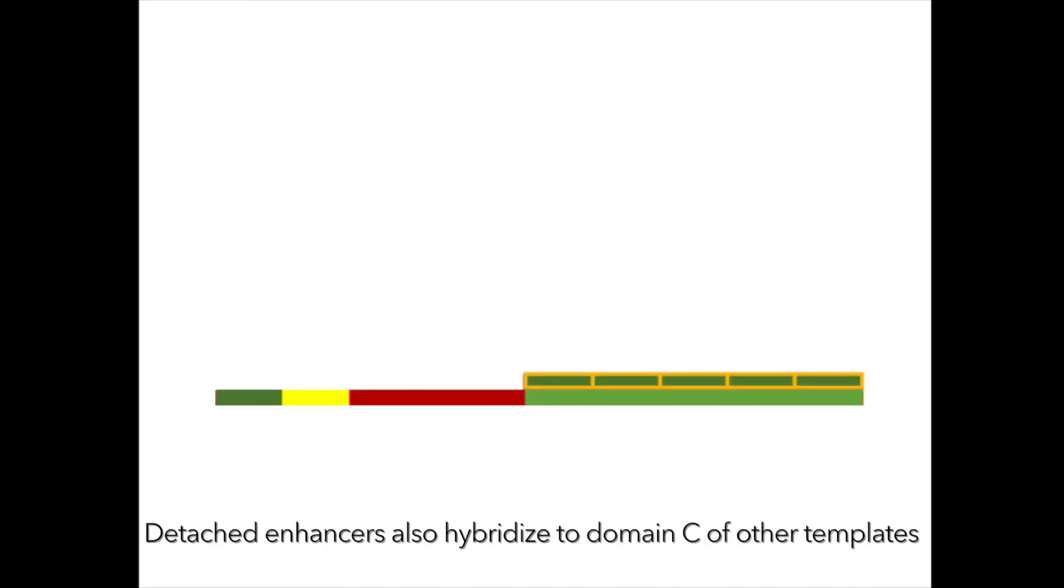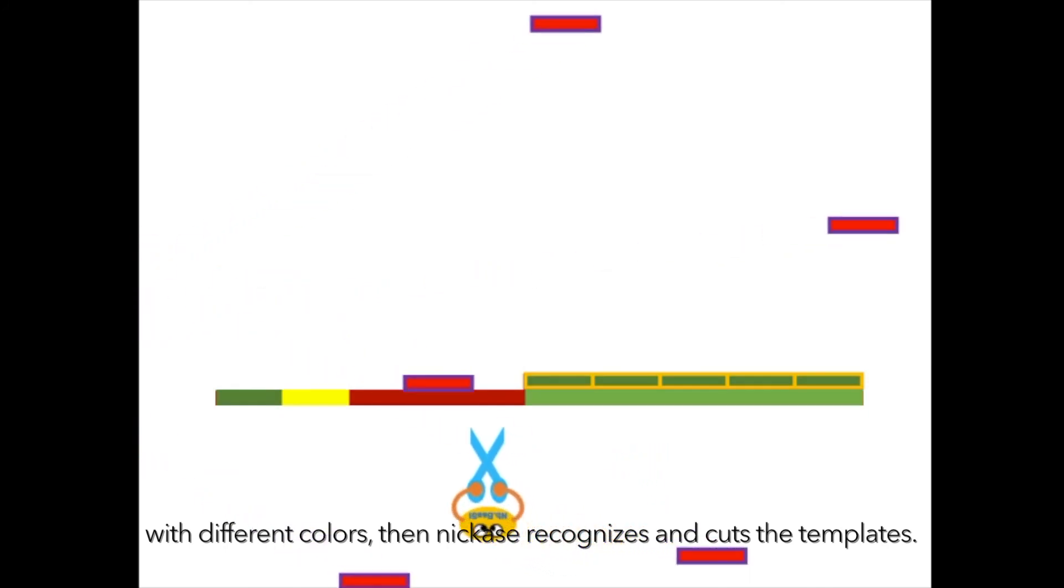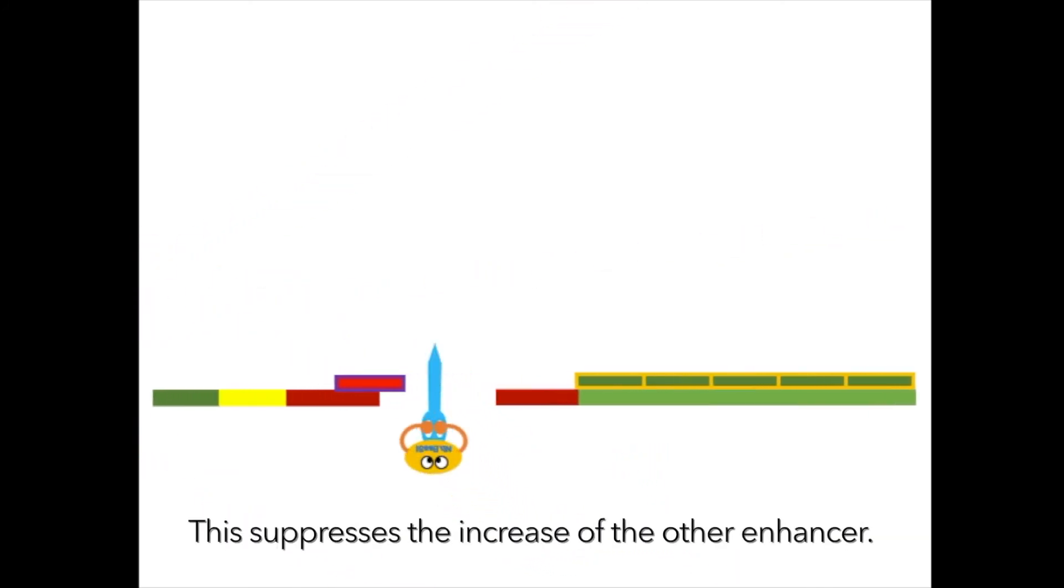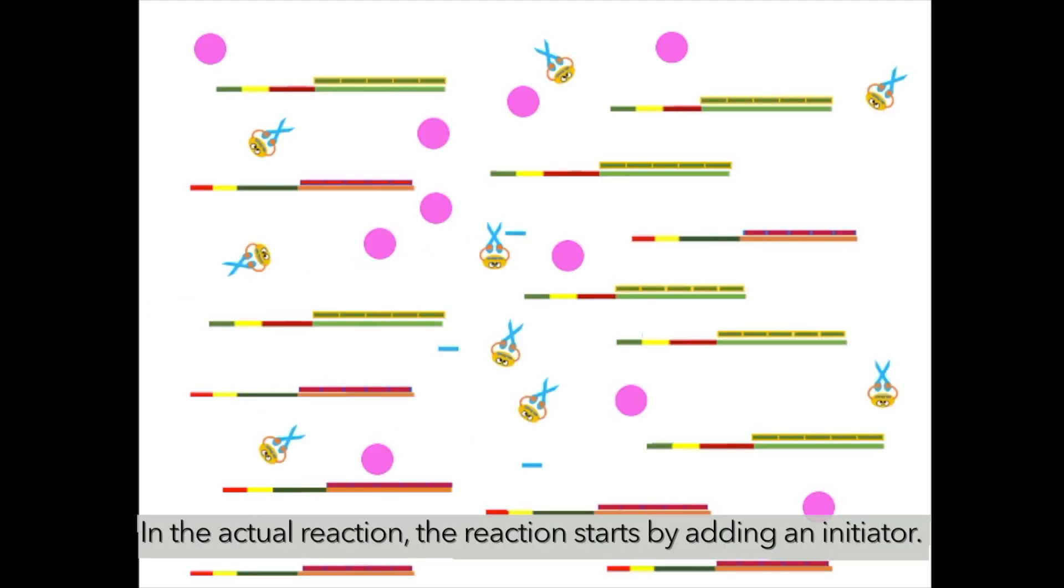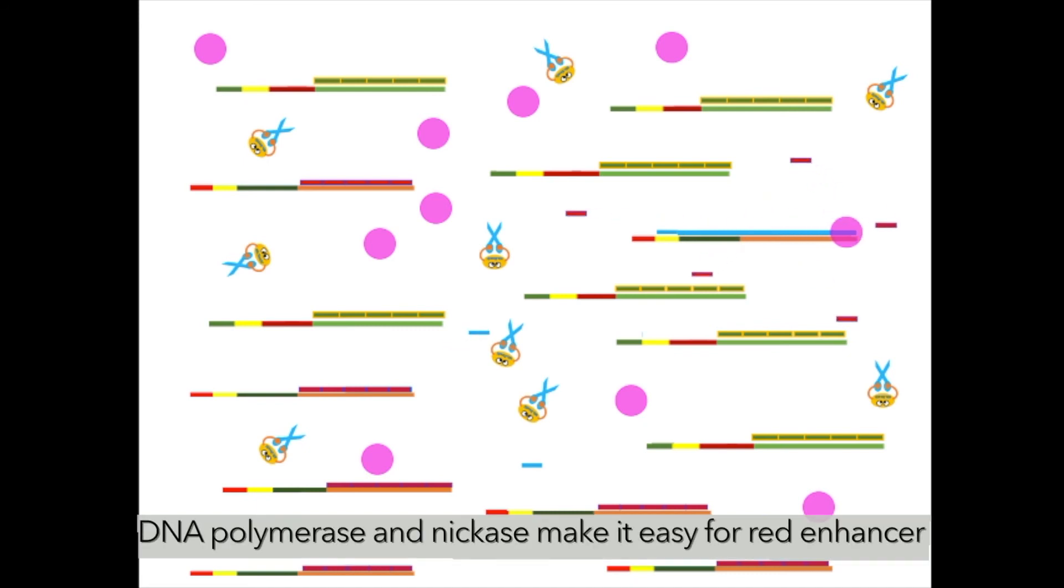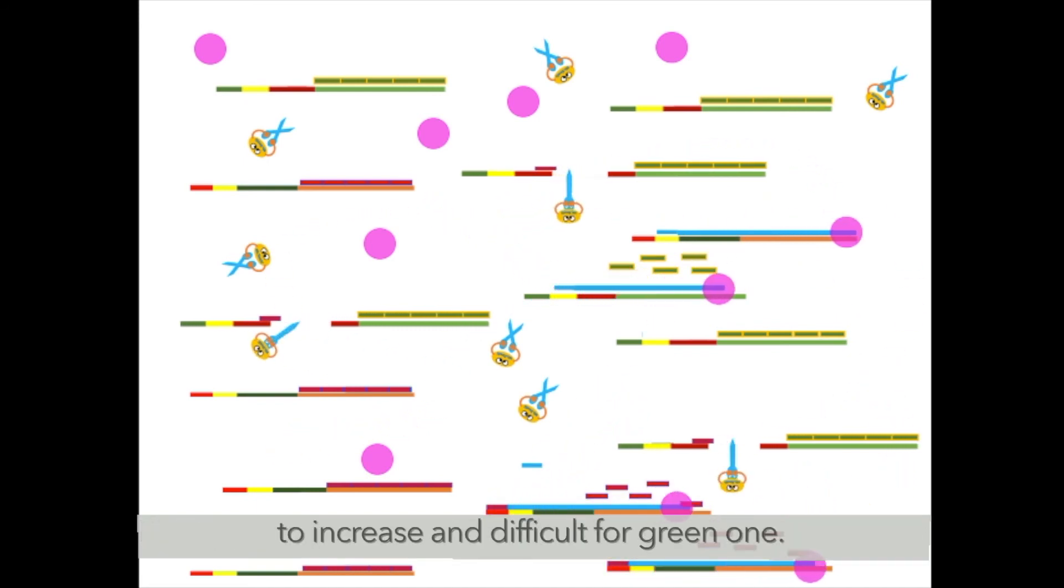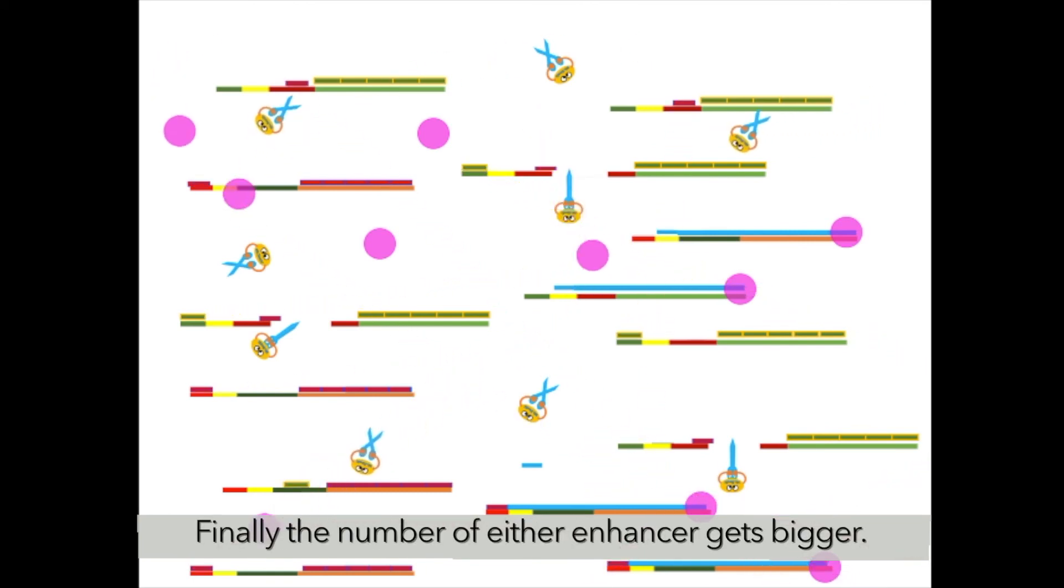Detached enhancers also hybridize to domain C of other templates with different colors, then nickase recognizes and cuts the templates. This suppresses the increase of the other enhancer. In the actual reaction, the reaction starts by adding initiator. DNA polymerase and nickase make it easy for red enhancer to increase and decrease for green one. Finally, the number of ideal enhancer gets bigger.